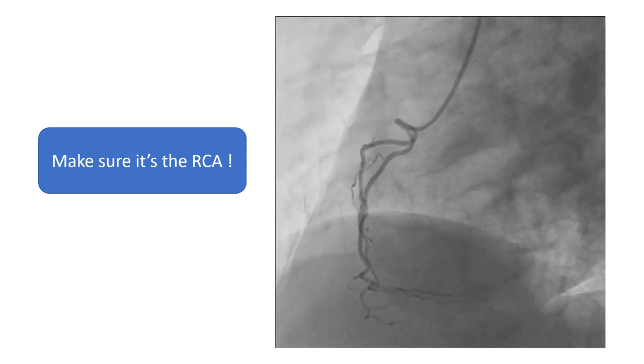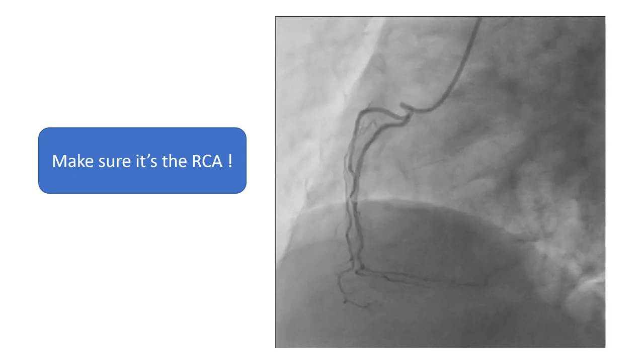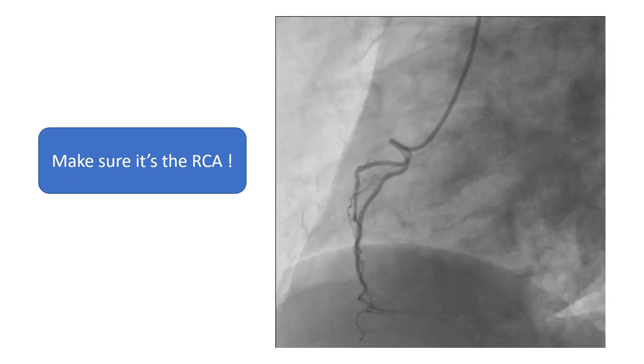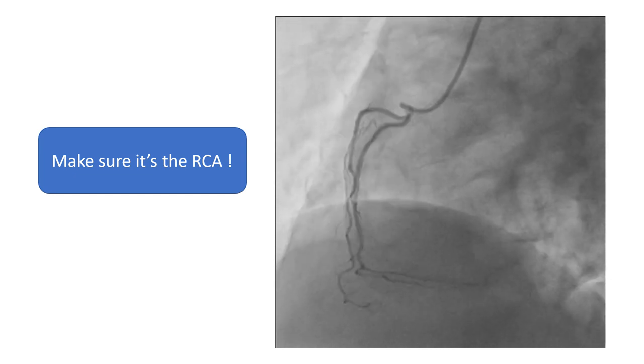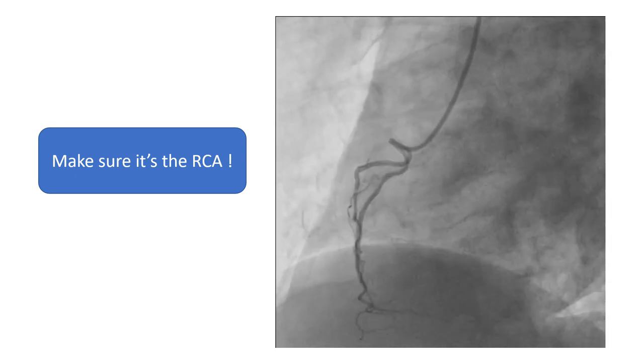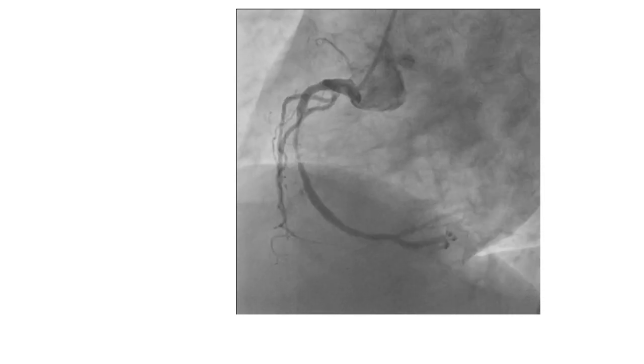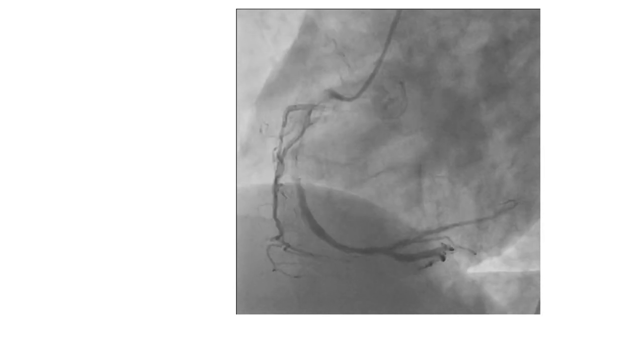This is an LAO view of the RCA. It was considered a non-dominant RCA. When you see that, make sure that the PDA is arising from somewhere else, usually the dominant circ, or is totally occluded. If not found, then you have to look for it, look for the proper RCA. This is the same case where angiography was done properly. The catheter was pulled back and the complete opacification of the RCA was seen.